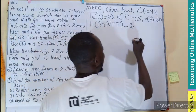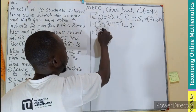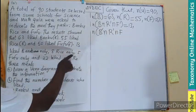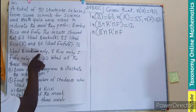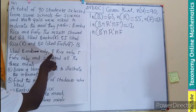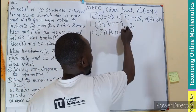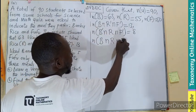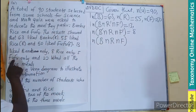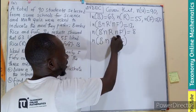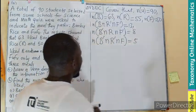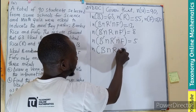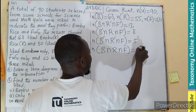5 Fufu only, so that means the number of Bangku-complement intersection Rice-complement intersection Fufu is 5. 8 Rice only. The intersection of all three — Bangku intersection Rice intersection Fufu — gives us 22.